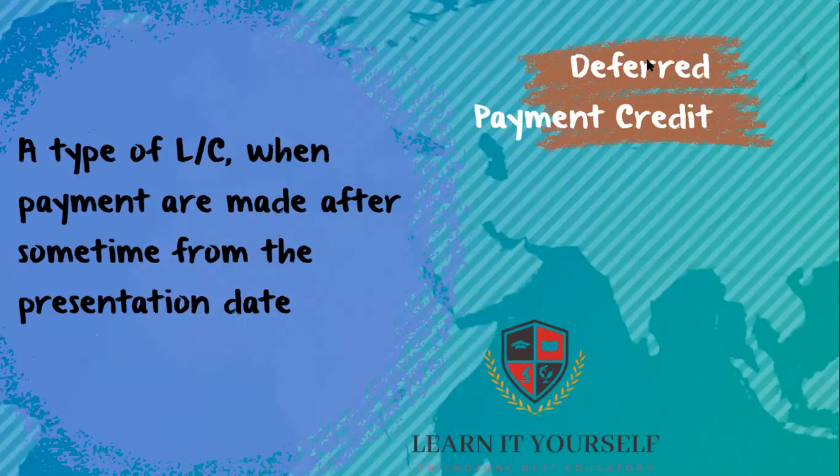A deferred payment letter of credit provides for payment sometime after presentation of shipping documents by the exporter. For example, if documents are presented at the negotiating or nominated bank today, the bank will make payment not after one day or seven days, but after the completion of the due date — if it is 60 days, payment will be made on the 60th day.